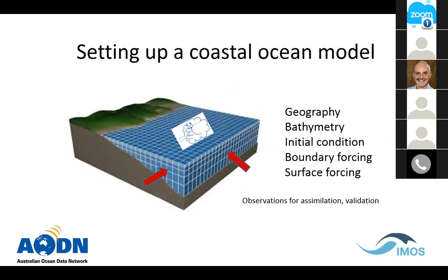In all those processes you need certain things: information about geography and coastlines, information about sea depths and bathymetry, an initial condition, boundary forcing for the ocean, surface meteorological forcing to drive ocean circulation, and some other information particularly for coastal areas. In MARVEL at the moment, once you've chosen your region of interest and time period, a web processing service delivers observations that you can use for validation of the simulation.